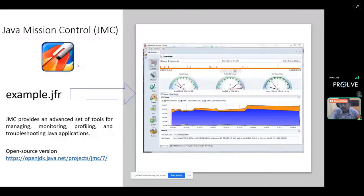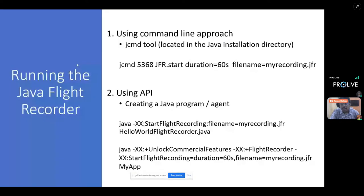There are two approaches to start running the Java Flight Recorder. The first is using the command line with the jcmd tool, which is part of the Java installation directory. The command specifies the process ID, the task (start recording), a duration, and a file name — for example, myrecording.jfr. This starts the flight recording, runs for 60 seconds, and writes the contents to the recording file.